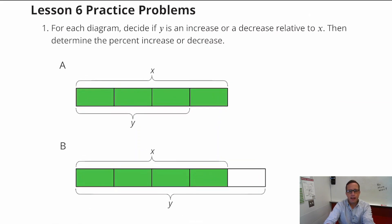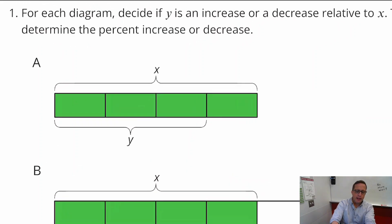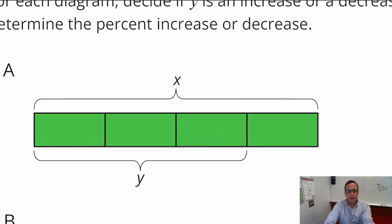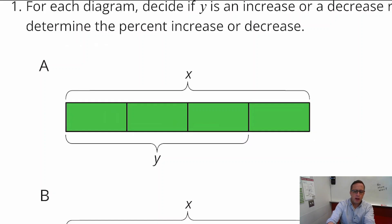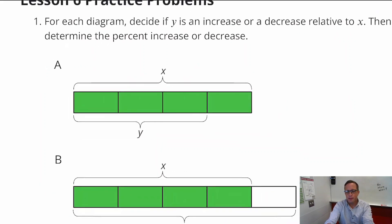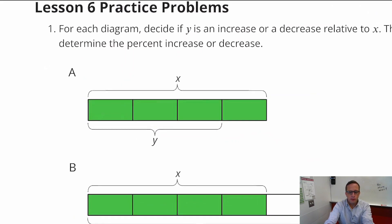For part A, we're looking at whether y is an increase or decrease relative to x. If we look at x, x is larger than y — x represents the whole thing, and y is part of it. So this is a decrease.